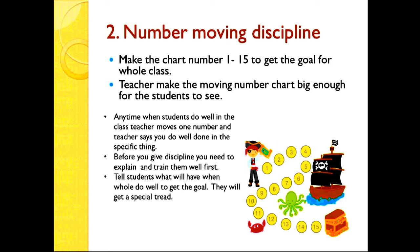Number two: moving discipline. This is a kind of game for finding places. The goal goes from number one to number 15. Anytime the student does well, you can move them from number one to number two, three, four, and so on up to number 15. If they reach number 15, it means they did a very good job, so you can give them a reward.